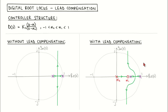Lead compensation is therefore used to improve the closed loop transient response. You might have noticed that the structure of the lead controller and its effect on the root locus is exactly the same as in the continuous time root locus. You can therefore apply your knowledge of lead compensation for analog controllers to digital controller design. However, remember that the interpretation of poles and zeros in the z-plane differs from their interpretation in the s-plane.